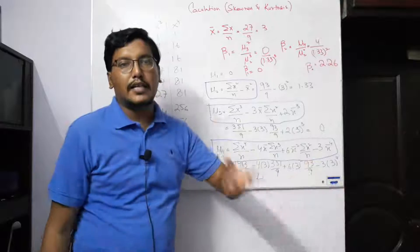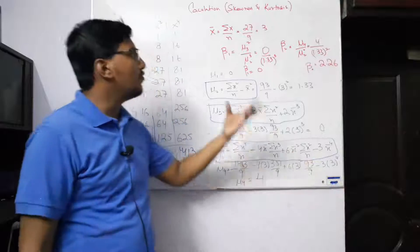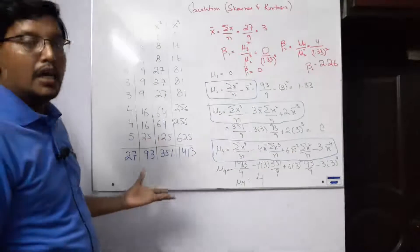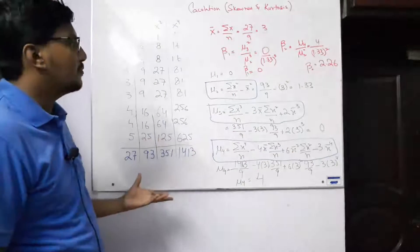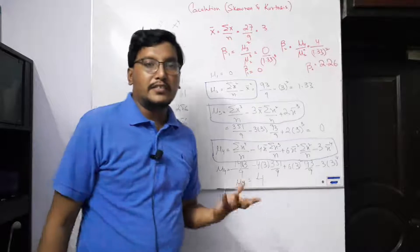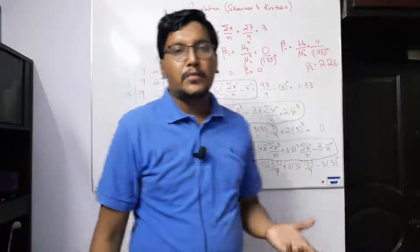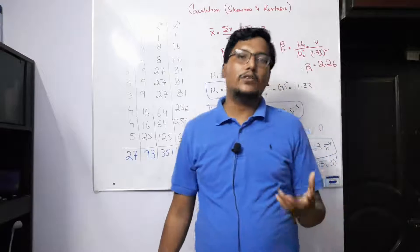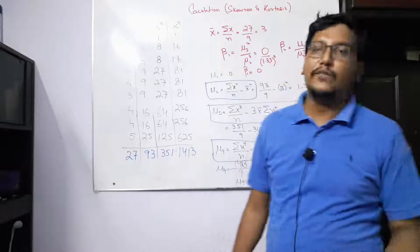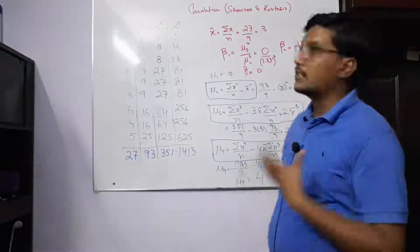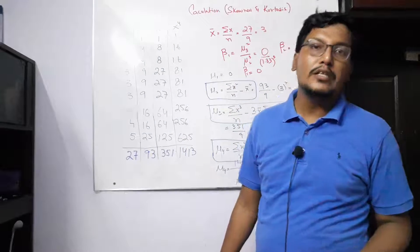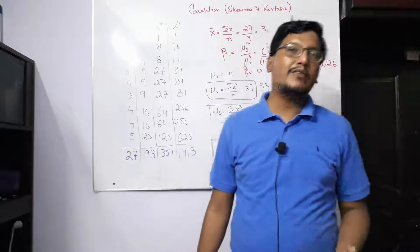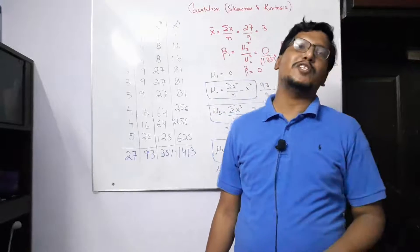These two results — skewness and kurtosis — help us find out the shape of the data distribution. In this topic we found out how to calculate the skewness and kurtosis of the data. Please keep watching and subscribe to our channel for more videos.